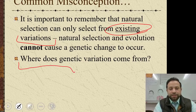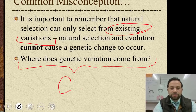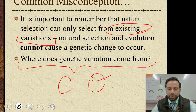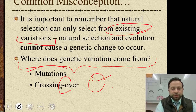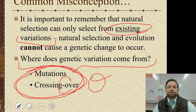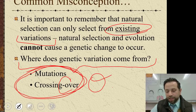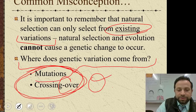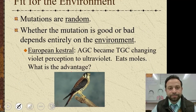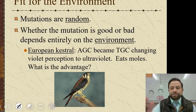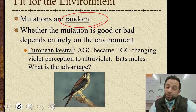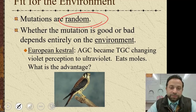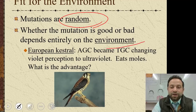Where does genetic variation come from? Remember: crossing over and mutations. These are two things to remember when asked where variations come from. Mutations are random, and whether a mutation is good or bad depends completely on the environment.